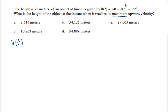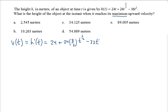First we take the velocity function, which is the derivative of the height function. So 24t to the 1 — the 1 comes down, and 24t to the 0 is gone — using the power rule. Then plus 24 times 3/2: the 3/2 comes down, so 24 times 3/2, and the t power reduces by 1, giving t to the 1/2. And then minus 32 — because 2 comes down to multiply the 16, and t power reduces by 1 to give t to the first power.